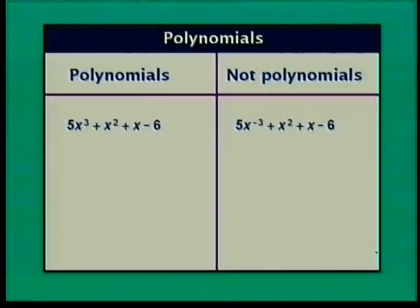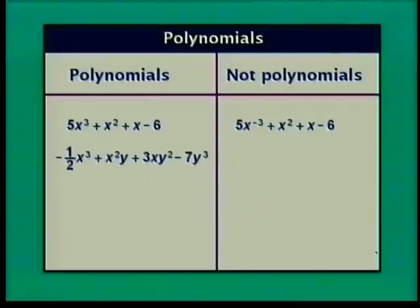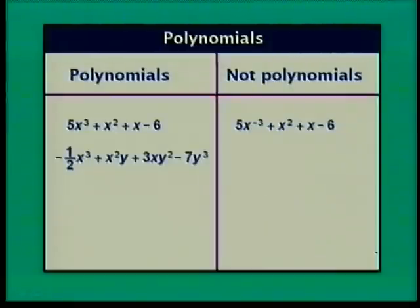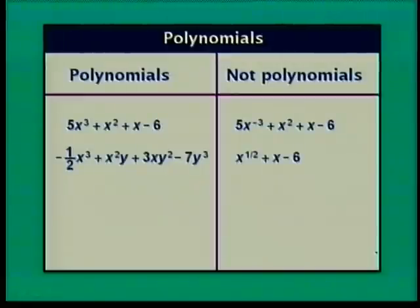5x to the negative 3 plus x squared plus x minus 6 is not a polynomial — the exponent negative 3 makes it not a polynomial. Next week we'll talk about what a negative exponent means. Also, x to the one-half plus x minus 6 is not a polynomial since one-half is not a whole number. If you take Math 95, you'll learn about rational exponents.